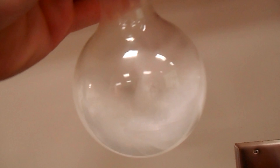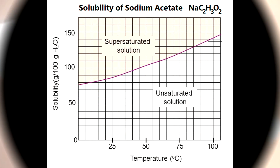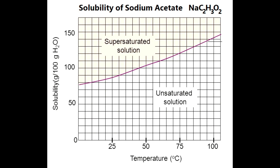Now let's take a closer look at what's really happening here. This is a solubility curve for sodium acetate, and it shows you how much you can dissolve at different temperatures in 100 grams of water. At room temperature — 20 degrees Celsius — we can put in a certain amount of sodium acetate until we reach that purple line, then we've dissolved all that we can. We've reached the solubility of sodium acetate for that temperature, and we'll have a saturated solution.